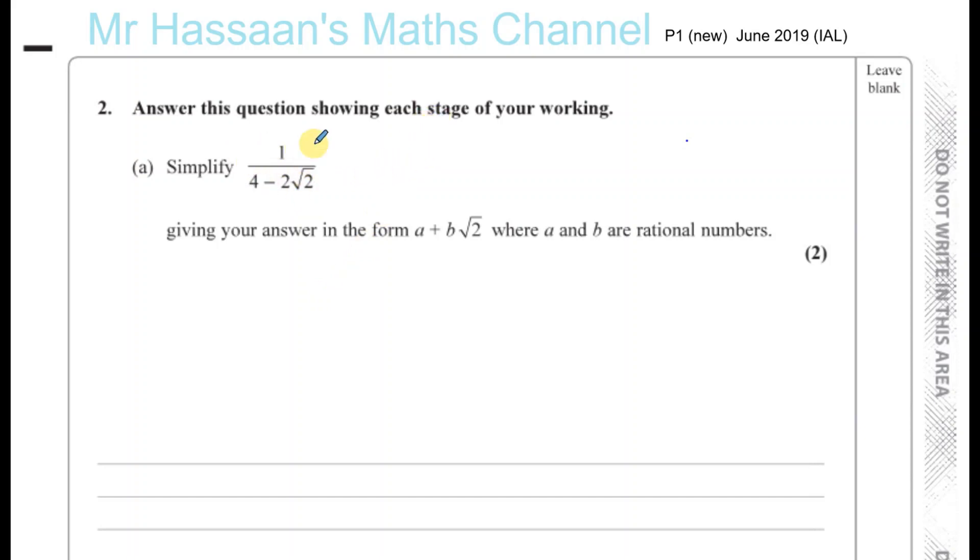Here we are asked to simplify this fraction which involves something in a surd form in the denominator. The denominator is not rational. When you simplify such an expression, it should be expressed with a rational denominator. So we have to rationalize the denominator, which is done when you have something which is made up of a combination of a rational and irrational number by multiplying what's called the conjugate.